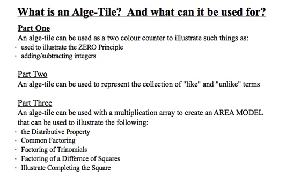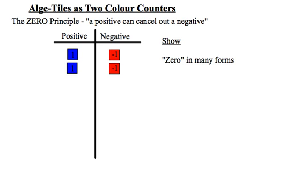We're going to illustrate something called the zero principle. In part two we'll be using them to illustrate like and unlike terms, and in part three we'll be using them in combination with the multiplication array to create an area model. So let's get started on part one.